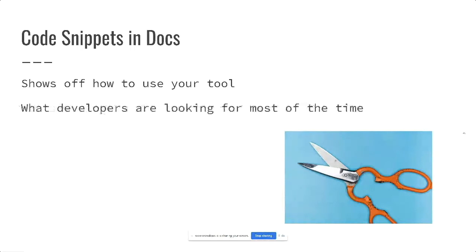This is where you can show the actual developers using your tools how to use it and how easy it is. Because most of the time, honestly, developers are just looking for code to copy and paste. You don't want to have some cool tool you're telling everybody is going to save them so much time and make their app super performant, and then not have one working code snippet. Those code snippets are a big driver of the adoption of a tool in the developer community.